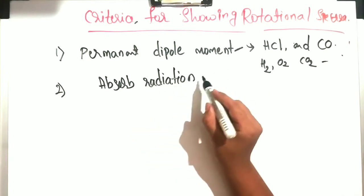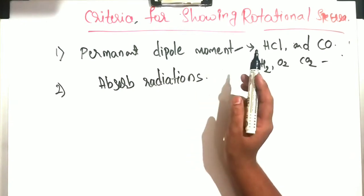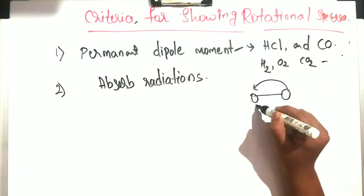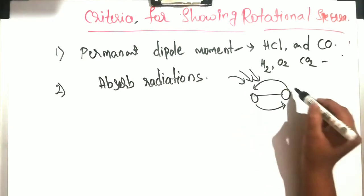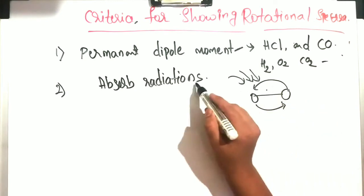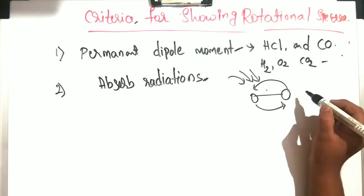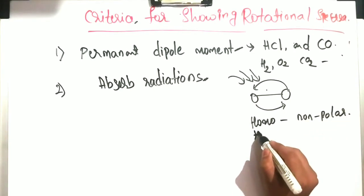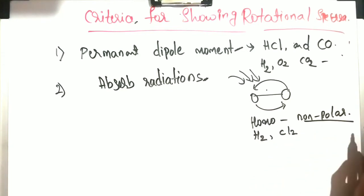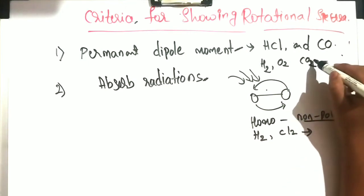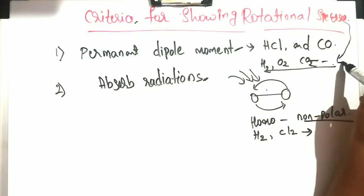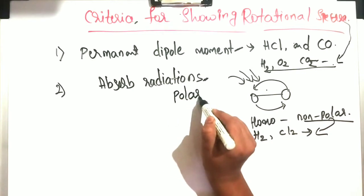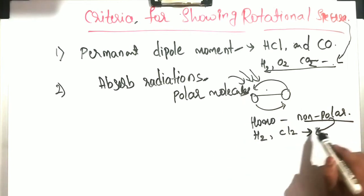The second criteria is that the molecule should absorb radiations. Radiations are absorbed in rotational levels only when a change in dipole moment takes place during rotation. Homonuclear molecules — which are non-polar molecules like H₂ and Cl₂ — have no rotational spectra. Since these are non-polar, they don't show rotational spectra. Therefore, to show rotational spectra, molecules must be polar, not non-polar.